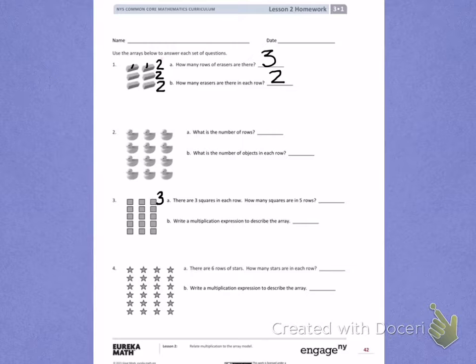I can count on: 4, 5, 6. That means the second row has 3 more, which is 6. Continuing to count from 6: 7, 8, 9. Then continuing to count from 9: 10, 11, 12.